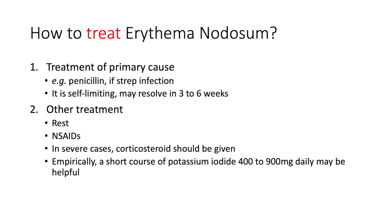How do you treat erythema nodosum? You simply address and treat the primary cause — like penicillin for strep infection and so forth. Generally, erythema nodosum is self-limiting and may resolve in three to six weeks. Other treatments include rest, NSAIDs. In severe cases, corticosteroids can be given empirically, and a short course of potassium iodide 400 to 900 milligrams daily may be used.